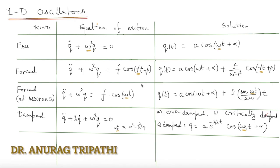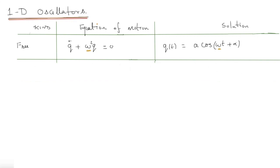I have collected here all the results that we have derived in the context of one dimensional oscillators. The first entry is that of a free oscillator, meaning there is no damping, neither are there any external forces. Here omega square is the natural frequency of the oscillator, and this depends on, for example, the mass or the spring constant — actually the ratio of it — and the solution is A cos(omega t + alpha).